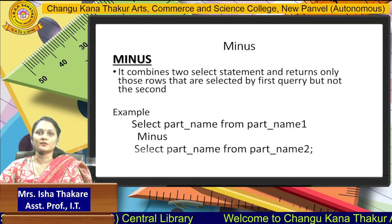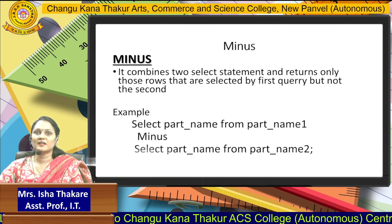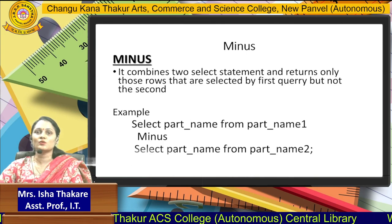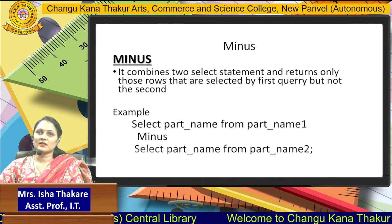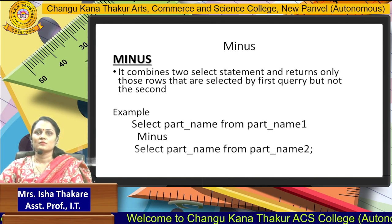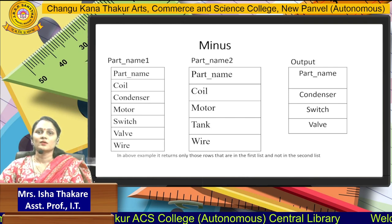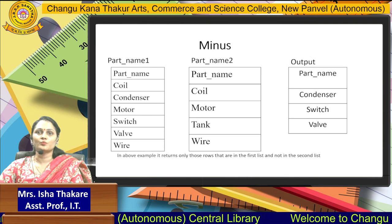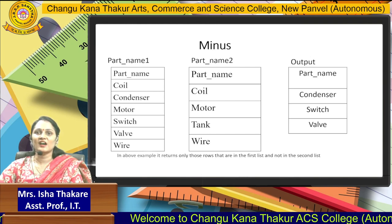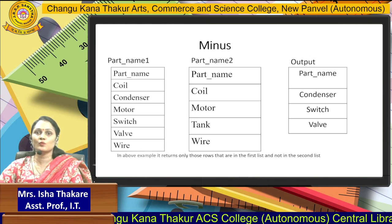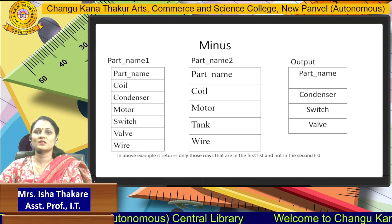The last operator is the Minus operator. It combines two SELECT statements and returns only those rows that are selected by the first query but not the second one. The contents of the second query are subtracted from the first query to get the resultant output. The syntax is: SELECT part_name FROM part_name_1, MINUS, SELECT part_name FROM part_name_2. The output contains Condenser, Switch, and Veil — values present in the first query but not in the second.